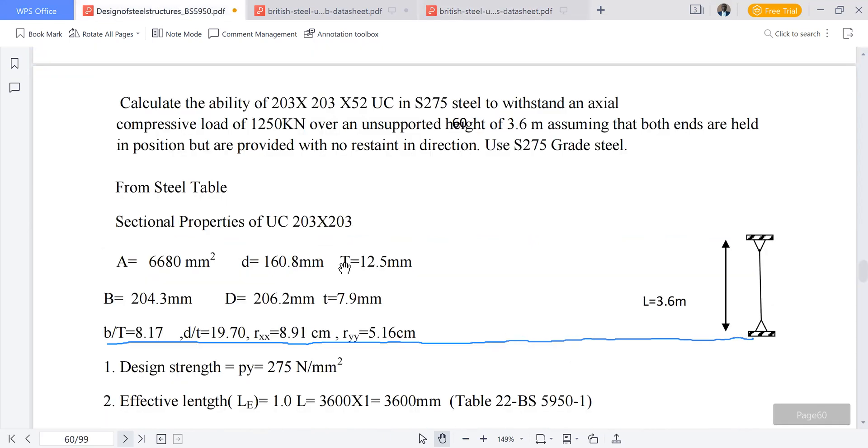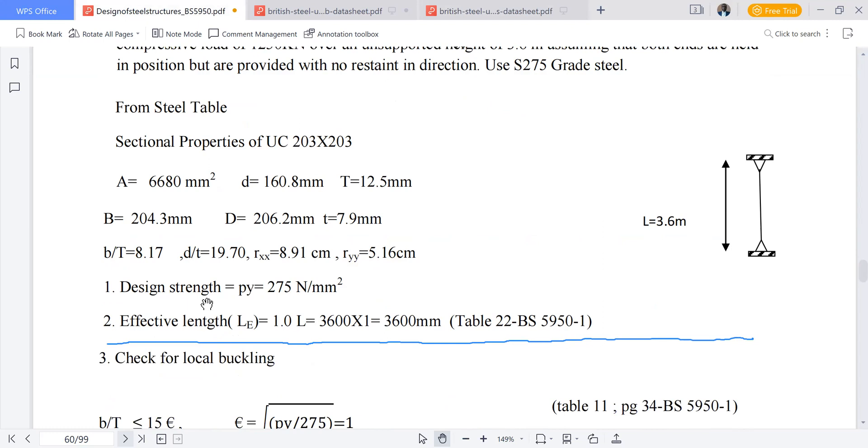We have now obtained all the required properties. Now we can proceed by saying that our design strength py will be equivalent to 275 newtons per millimeter squared. Our grade is 275. The reason why our py is 275 is that the thickness of flange capital T and the thickness of web small t are less than 16.